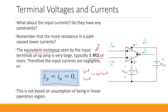This conclusion — that IP = 0 and IN = 0 — is derived from the very large input resistance. Importantly, this constraint is not based on the assumption of being in the linear operation region. Even if we are not in the linear operation region, this constraint is still satisfied. The previous voltage constraint was not always satisfied — in the saturation region, Vp minus Vn would be a non-zero value. But this current constraint is usually correct because it only relates to the internal resistance of the op-amp.